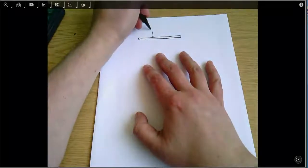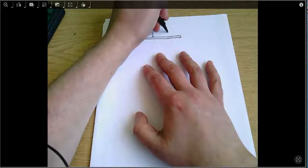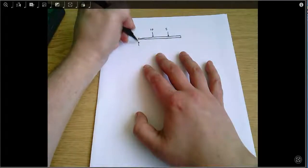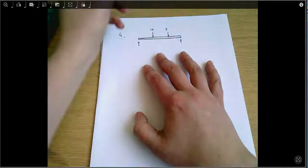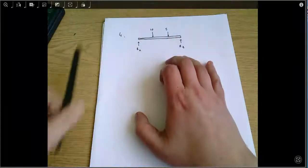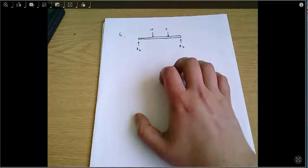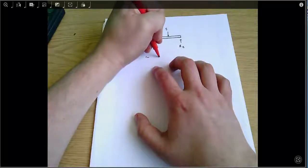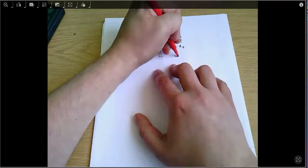We've got a downward force there of 10 kilonewtons, another one of 5 kilonewtons, and then we've got reaction forces at what we presume are the supports at A and B. We're told that these lengths here are 2 metres, 2 metres, and 2 metres.